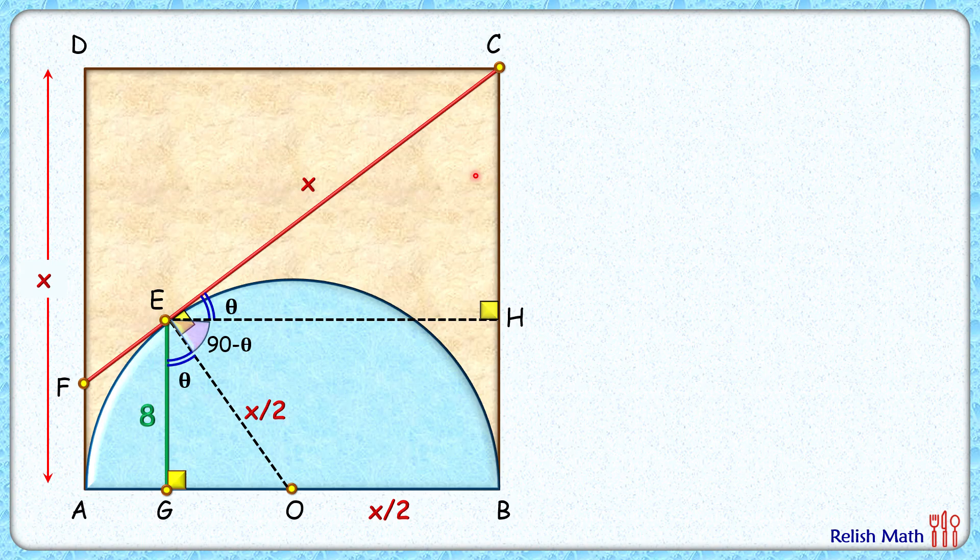If you look at this pink triangle here and this yellow triangle, both have got angle 90 and theta, 90 and theta in them. So by angle-angle similarity we can say that the pink triangle is similar to this yellow triangle.